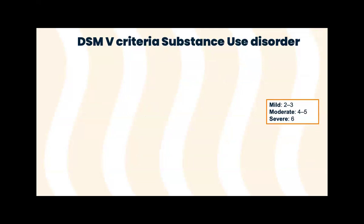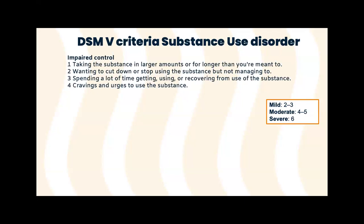The DSM-5 criteria for substance use disorder has changed dramatically from DSM-4. In the old DSM, there was a differentiation between substance use and substance dependence, and they no longer do that. A lot of people, when they talk about substance dependence, still use the old DSM criteria — which is all about withdrawal and tolerance. But the DSM-5 now puts them all together in one definition of substance use disorder, with four sections and 11 total criteria.